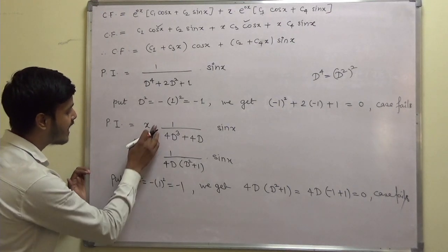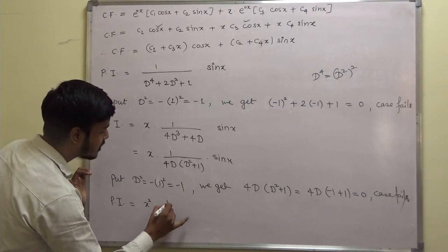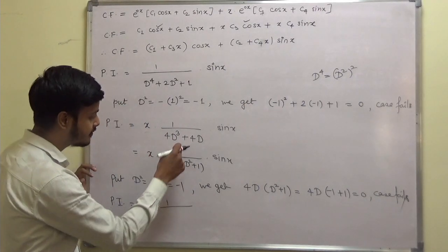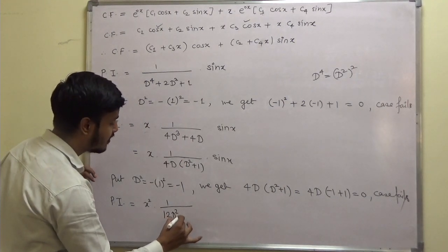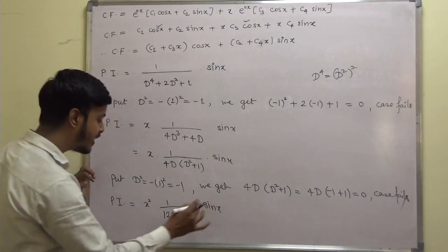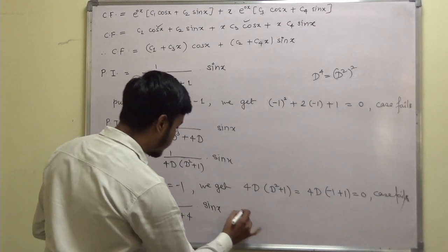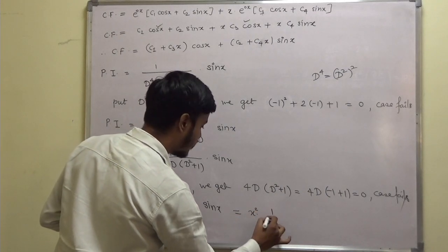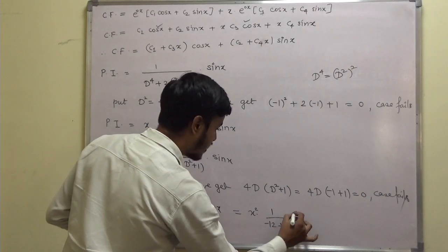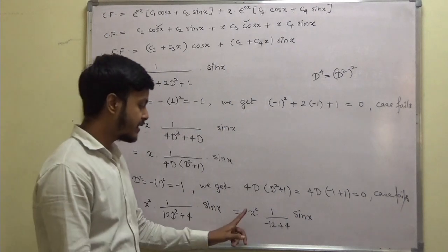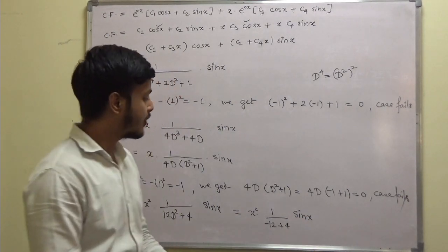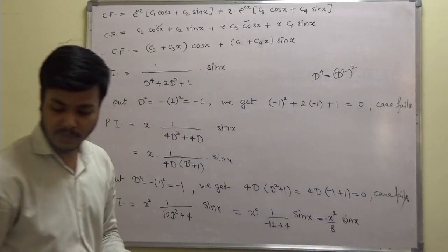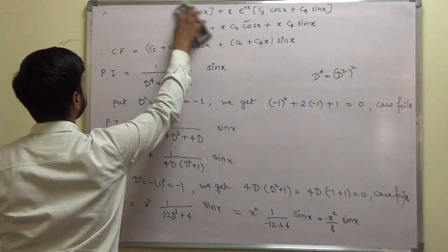Apply case-failure again: multiply numerator by x again, giving x² in numerator, and differentiate 4D(D² + 1) with respect to D to get 12D² + 4. Substituting D² = −1: 12(−1) + 4 = −8, which is not zero. So PI = x²/(−8) · sin x = −x²/8 · sin x.